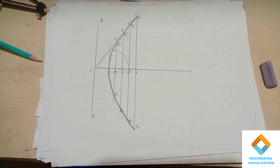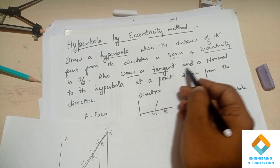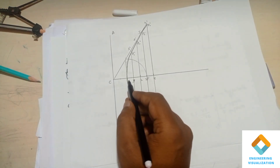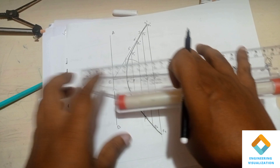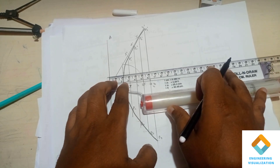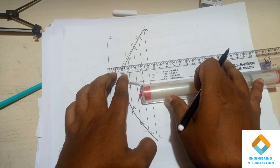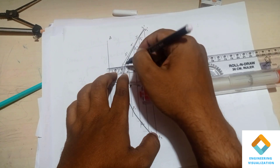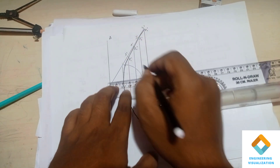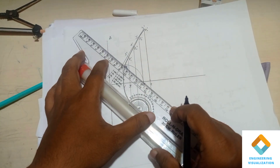Now we have to draw the tangent and the normal. As per the problem, draw the tangent and normal to the hyperbola at a point 25 mm from the directrix. From the directrix we measure a distance of 25 mm — that is 2.5 centimeters — and move the scale vertically upward to find where this point meets the hyperbola, and mark that point as E.